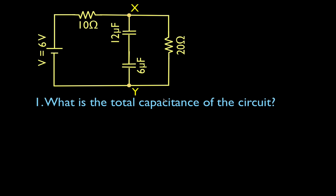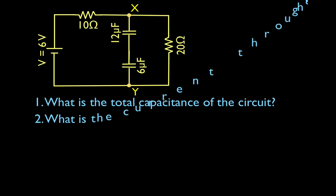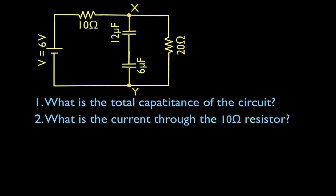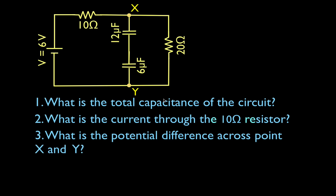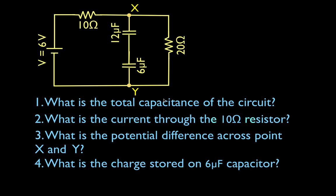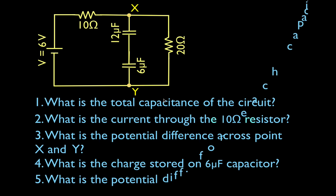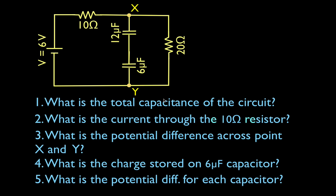What is the total capacitance of this circuit? What is the current through the 10 ohm resistor? What is the potential difference from point X to point Y? What is the charge that is stored on the 6 microfarad capacitor, and what is the potential difference for each capacitor?